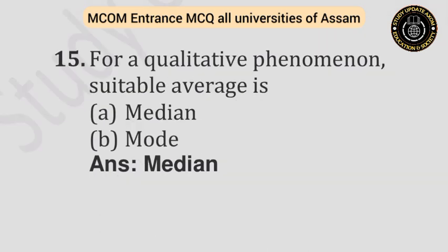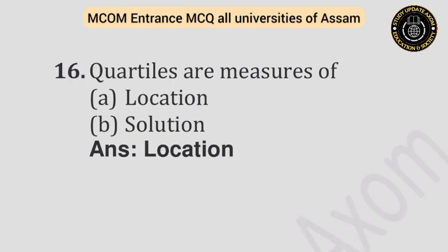Question number fifteen: For a qualitative phenomenon, the suitable average is — Option A: Median. Option B: Mode. Answer is median. Question number sixteen: Quartiles are measures of — Option A: Location. Option B: Solution. Answer is location.